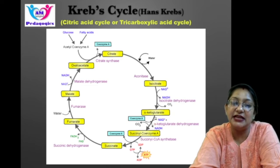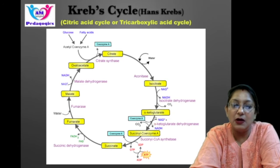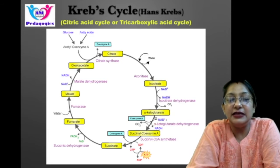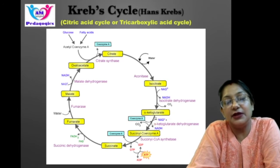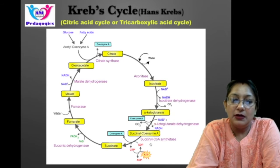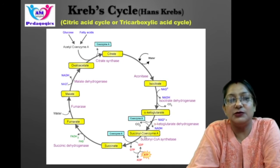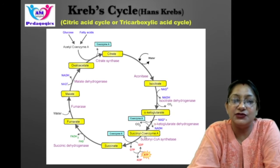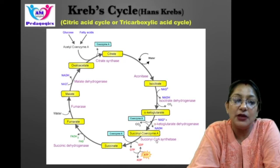In the third step, isocitrate undergoes dehydrogenation and decarboxylation to form the 5-carbon compound alpha-ketoglutarate. Carbon dioxide is released. The enzyme isocitrate dehydrogenase catalyzes the reaction; it is an NAD+-dependent enzyme, so NAD+ is converted to NADH. In the fourth step, alpha-ketoglutarate undergoes oxidative decarboxylation to form succinyl coenzyme A, a 4-carbon compound. This reaction is catalyzed by the alpha-ketoglutarate dehydrogenase enzyme complex, one molecule of carbon dioxide is released, and NAD+ is converted to NADH.